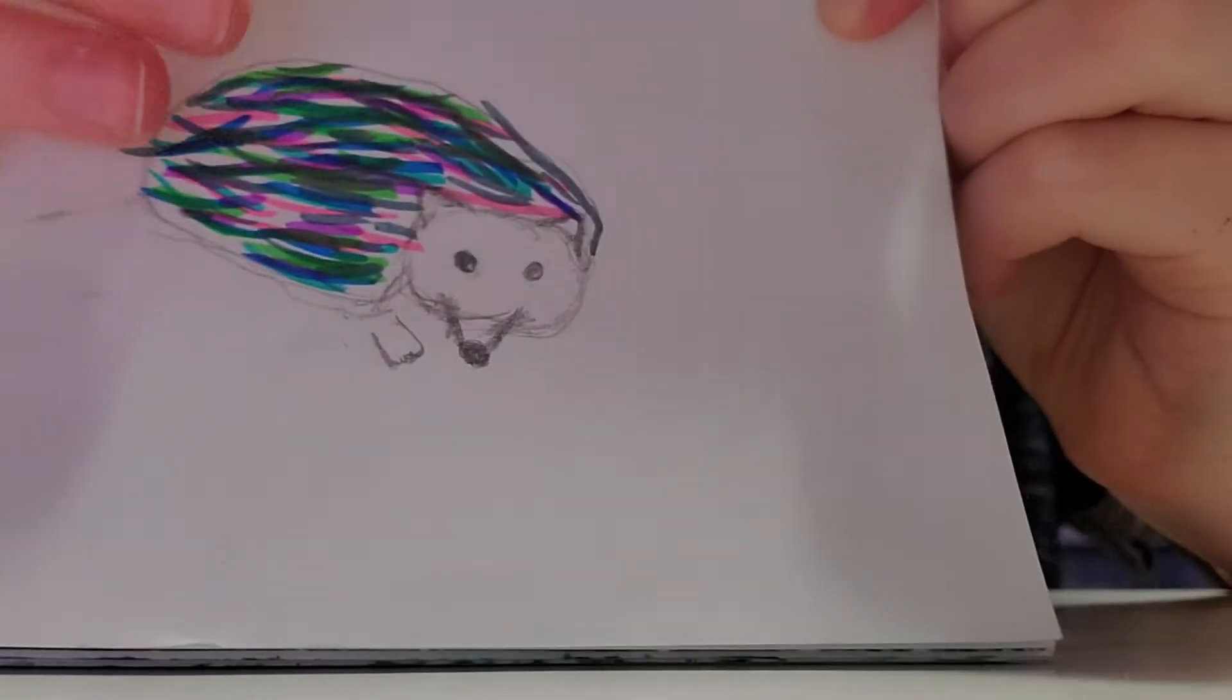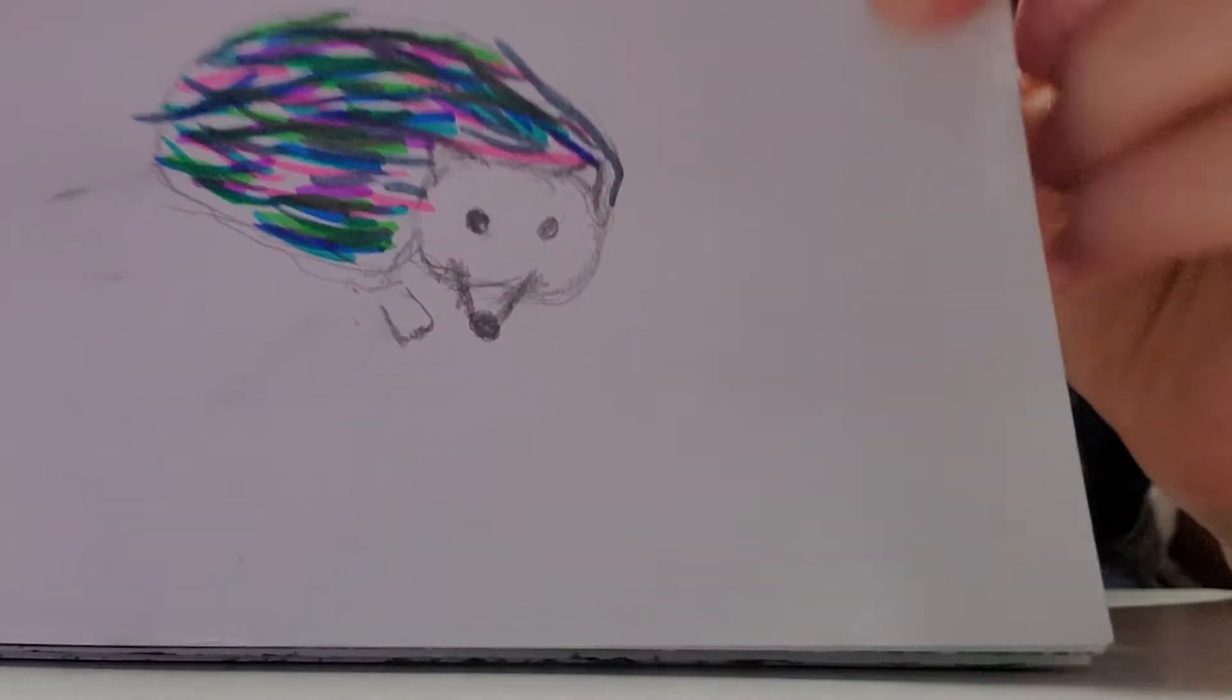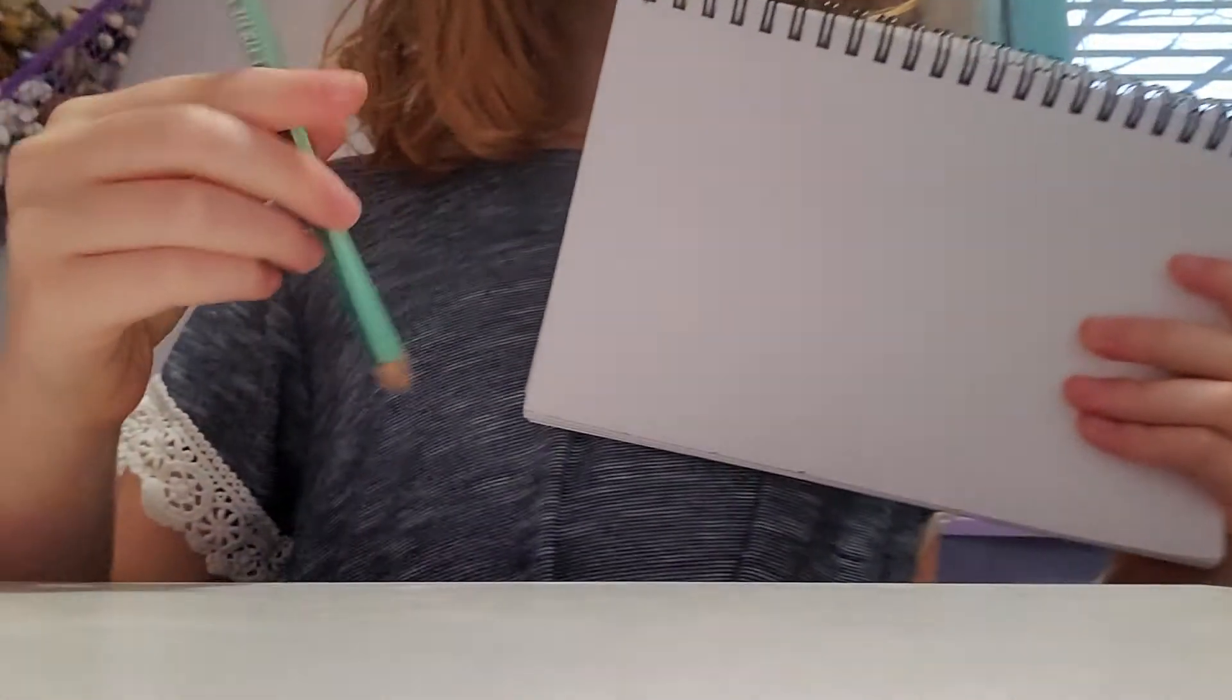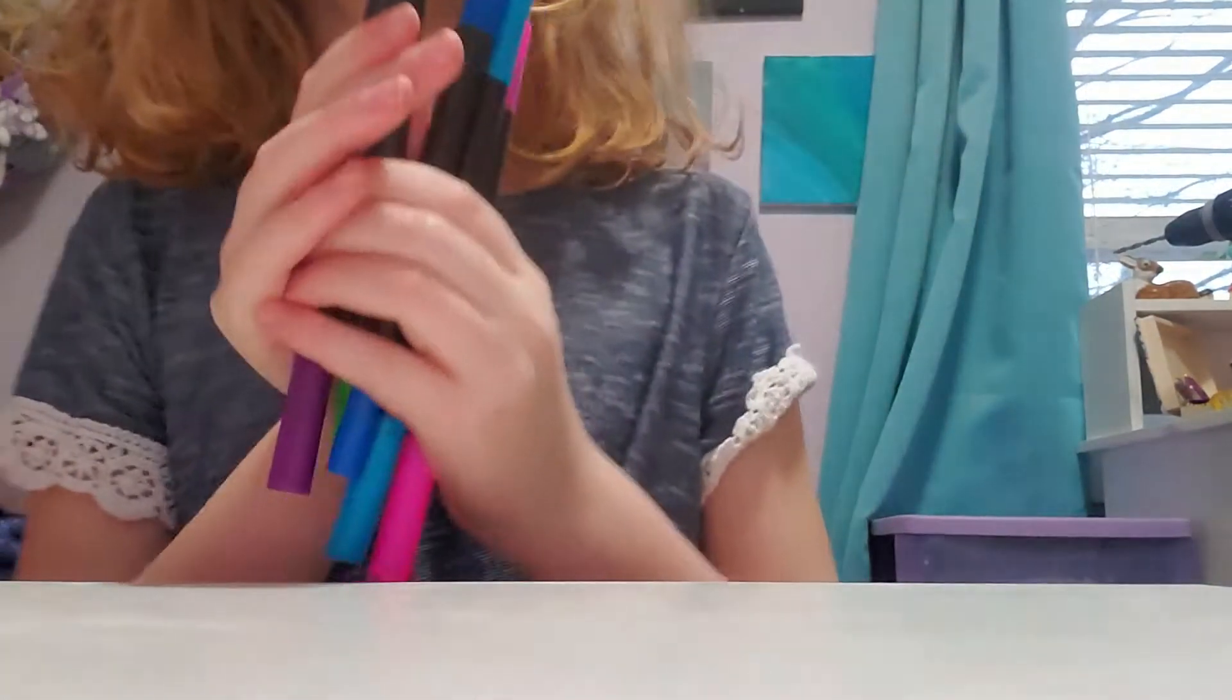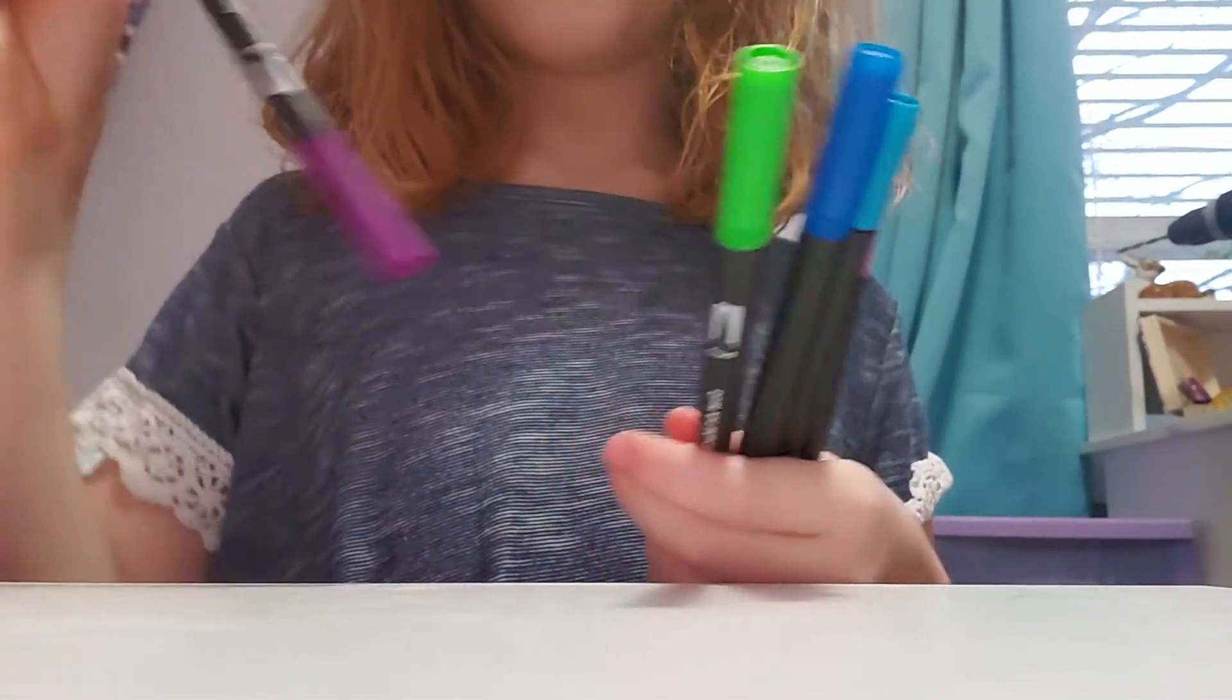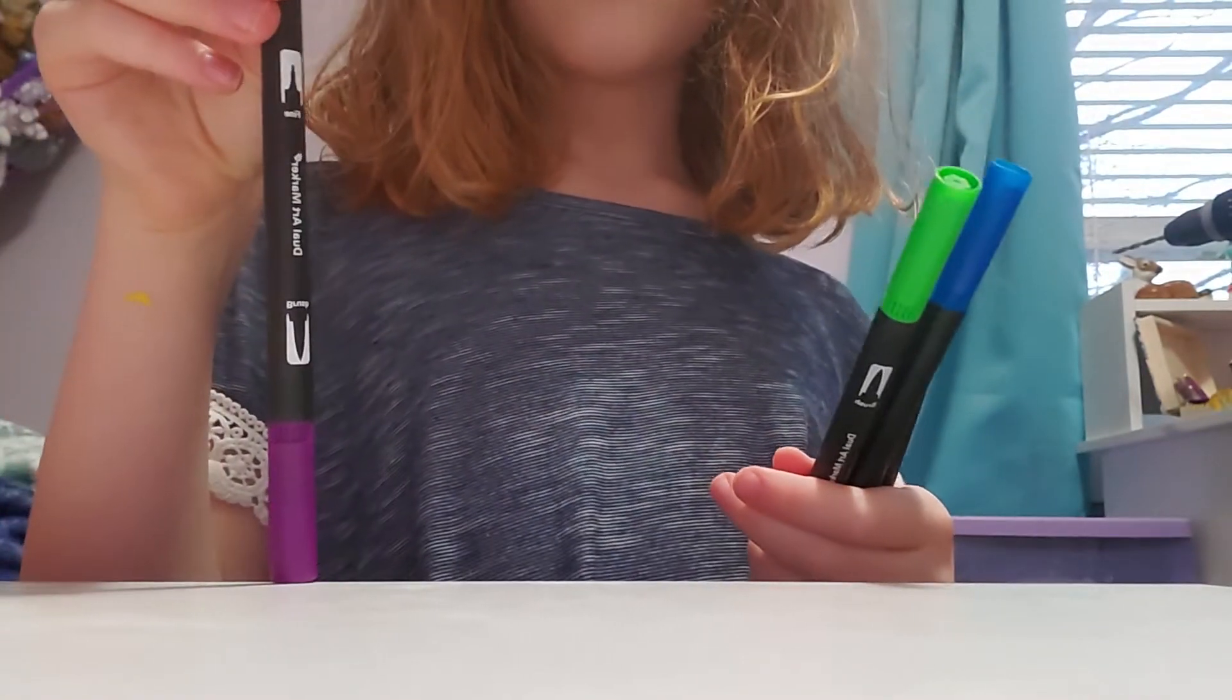Here's the cute little hedgehog that we're going to be drawing today. I think he's super cute. What you're going to need for this is obviously some paper - I'm just using this simple sketchbook - a pencil, and of course some colorful markers to use to make the hedgehog rainbow.